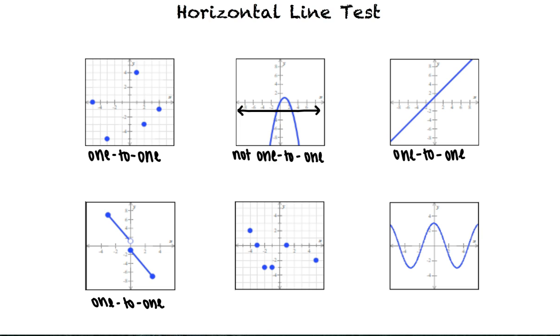For the next graph, we could draw a horizontal line at y equals 0 that intersects the graph more than once. This means the graph fails the horizontal line test and the function is not 1 to 1.